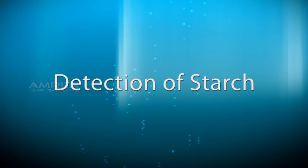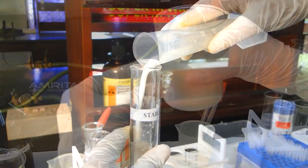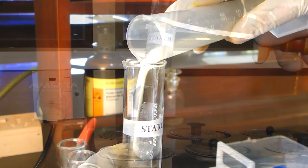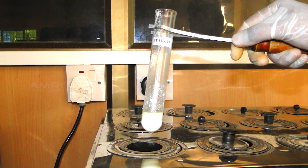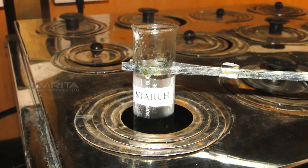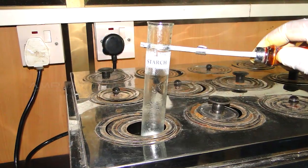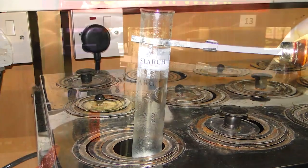Detection of starch. Pour 3 ml milk in a test tube labeled starch. Now place the test tube with the test tube holder in a water bath at 100 degrees Celsius. After 5 minutes, remove the tube from the water bath and allow it to cool.